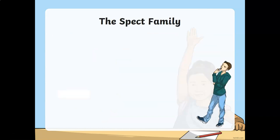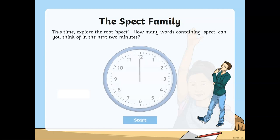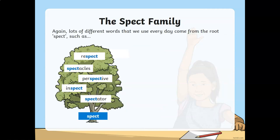Now let's have the spect family. How many words containing 'spect' can you think of in the next two minutes? Pause the video and write your answers. Time is up. Have you thought of these words? Respect, spectacles, perspective, inspect, and spectator. Or you might have a different one — that's also correct. But make sure that they're all from the spect family and they have meaning.